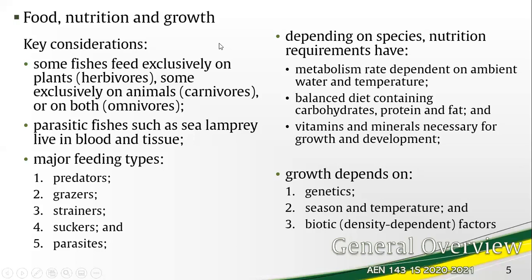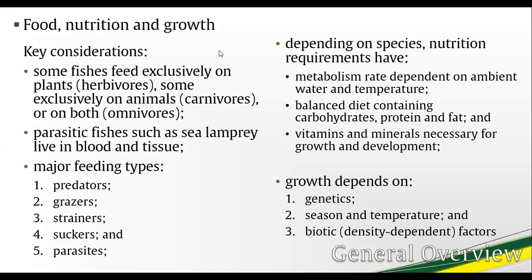Key considerations in food, nutrition, and growth are the ecological classifications of fishes — herbivores, carnivores, and omnivores — and some parasites that can coexist with the culture. The feeding type of the culture species can fall into five major types: predators, grazers, strainers, suckers, and parasites.